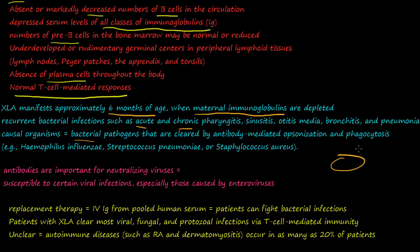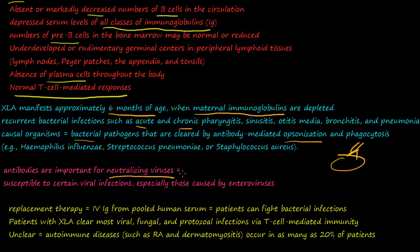Once a pathogen enters, antibodies bind to it in a process called opsonization, flagging it for engulfment by phagocytes. Without antibodies, this clearance fails. Key pathogens not cleared in XLA patients include Haemophilus influenzae, Streptococcus pneumoniae, and Staphylococcus aureus. Antibodies are also important for neutralizing certain viruses, so patients are susceptible to enteroviral infections as well.